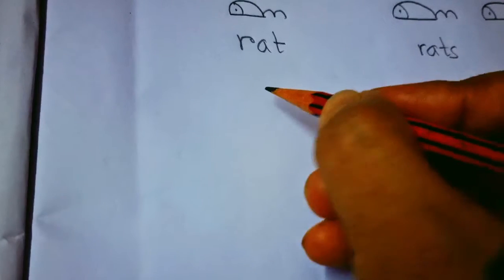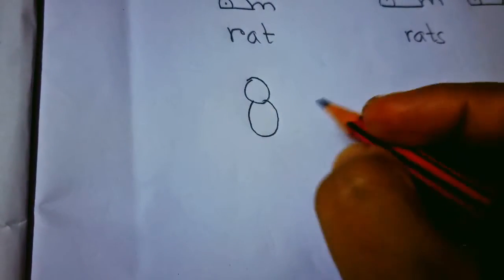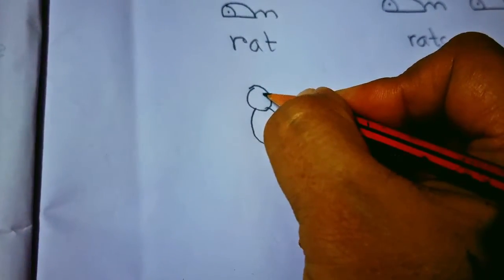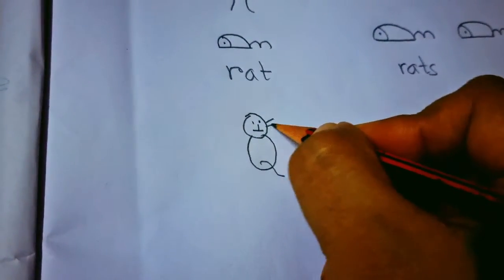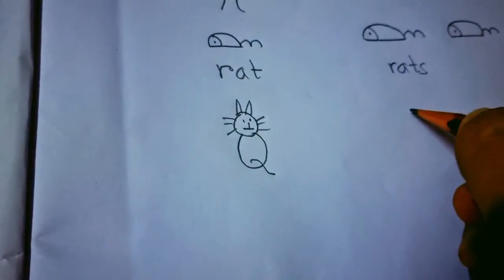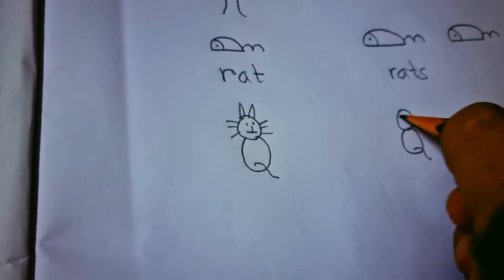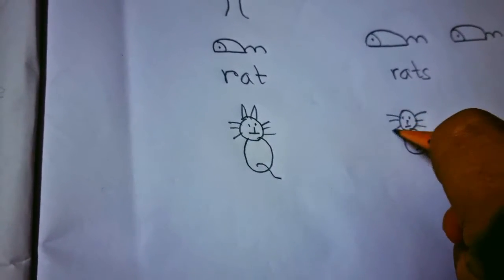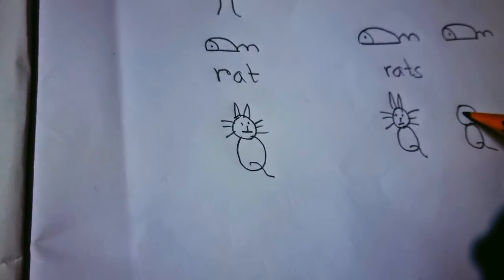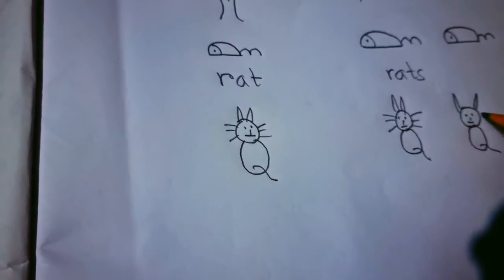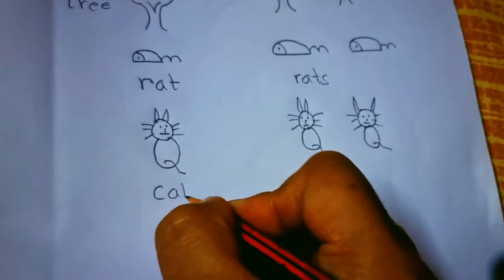Now we will make cat. First draw a circle, and then oval. Then bring the tail here. Give two dots, one like this. Now, once again here: circle, oval, bring the tail, dot, nose and mouth. Circle, oval, dots, ears. So, cat, cats.